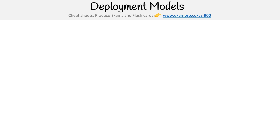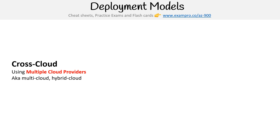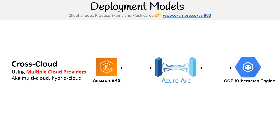Just one more deployment model — I want to talk about cross-cloud. This isn't something listed on the actual exam, but it's something you should understand. Cross-cloud is when you're using multiple cloud providers; sometimes people refer to this as multi-cloud or hybrid cloud. There's a service called Azure Arc, which extends your control plane so you can run Kubernetes containers on different platforms. For example, you could have AWS on the left with EKS and GCP's Kubernetes Engine, and run virtual machines all treated like they're on the same network. Cross-cloud is becoming very popular with extremely large organizations that have very unique requirements — it definitely gets left out but is part of the industry.